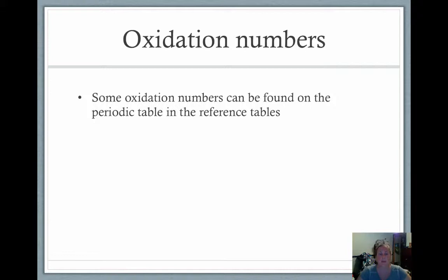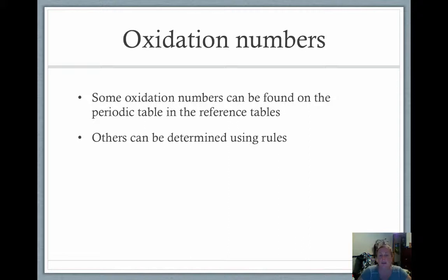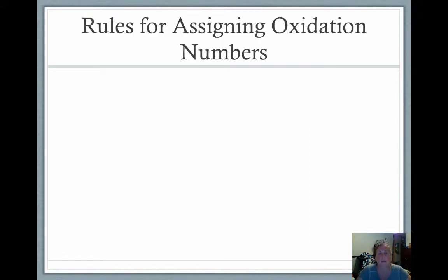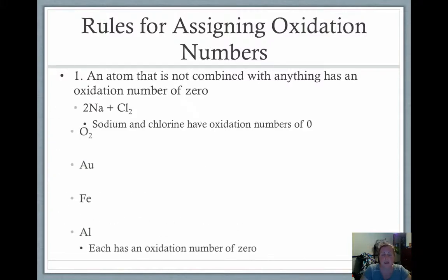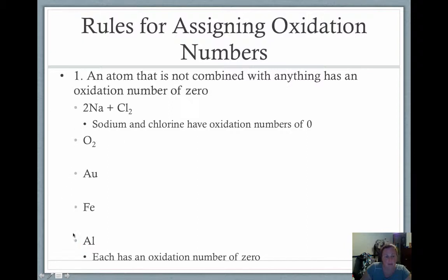Some oxidation numbers can be found using your periodic table and reference tables, and others will be determined using rules. An atom that is not combined with anything has an oxidation number of zero. For example, sodium and chlorine as uncombined atoms both have no charge, so they have oxidation numbers of zero. Each of these has an oxidation number of zero because they are not combined with anything — they are atoms with no charge.